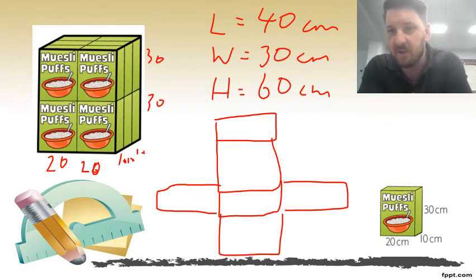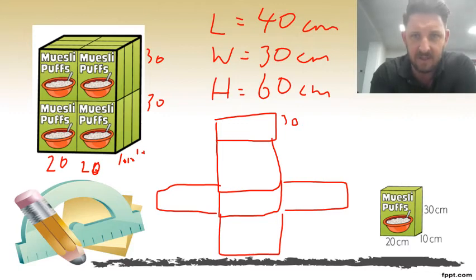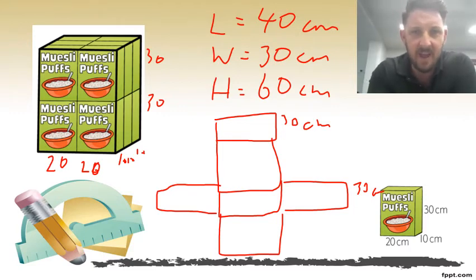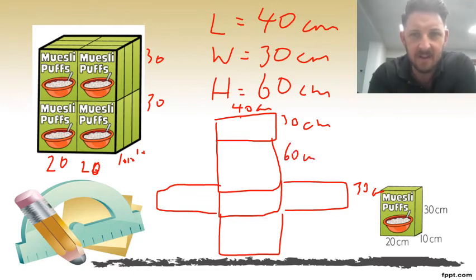On the small sides they are 30 centimeters. The length across the front is 40 centimeters, and the height is 60 centimeters. The opposite height face is also 60 centimeters. Let's now go in and work this one out.